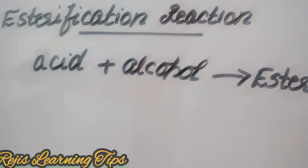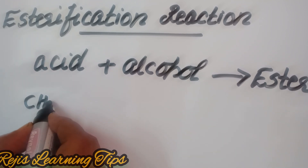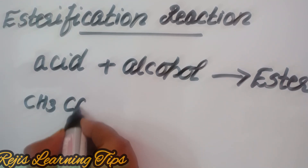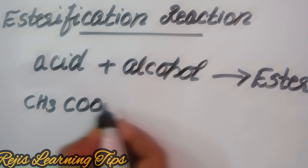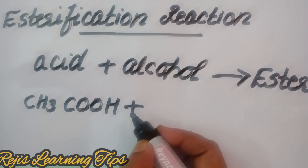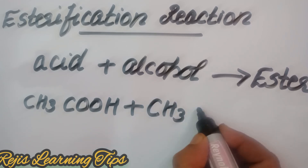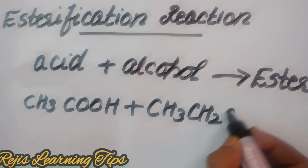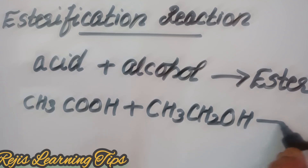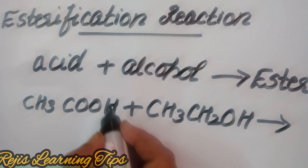As an example: ethanoic acid, which is CH3COOH, reacts with an alcohol — ethanol — to form an ester. This is how acid and alcohol react to form an ester.